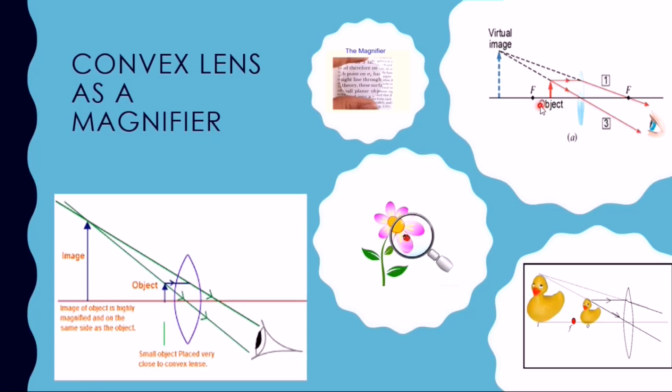Now we will consider two rays coming from the object. First ray that is parallel to the principal axis, after passing through the convex lens, passes through the principal focus.